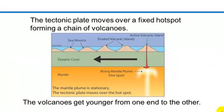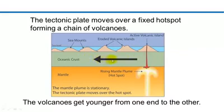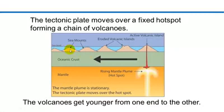Hotspots commonly form volcanic island chains like the Hawaiian islands. These result from the slow movement of a tectonic plate over a fixed hotspot – the hotspot is not moving, the plate is actually moving. At one end of the island chain, you see the youngest and most active volcanoes directly over the hotspot. Along the island chain, the extinct volcanoes become older and older and gradually erode to fall back beneath the sea. This way, a geologist can use the volcanic island chain to track the movement of the tectonic plate over time.